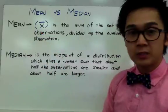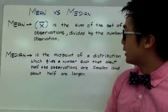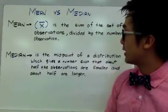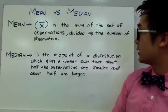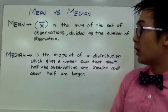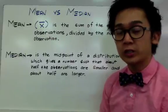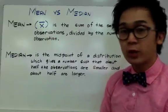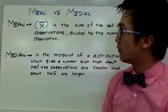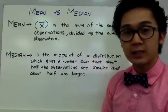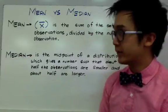By definition, the median is the midpoint of a distribution, which gives a number such that about half the observations are smaller and about half are larger. We're going to talk about the properties and the differences of the mean and median as the measure of center.